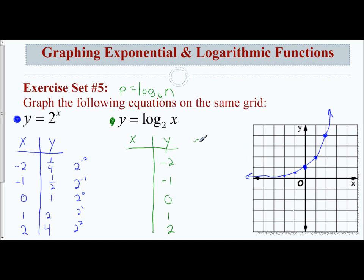To find the x, negative 2 equals log base 2 of x means 2 to the negative 2nd power equals x. Well, 2 to the negative 2nd is 1 fourth. If y is negative 1, that means 2 to the negative 1st power equals x, which is 1 half. This value is going to be 1, this is 2, and this is 4.